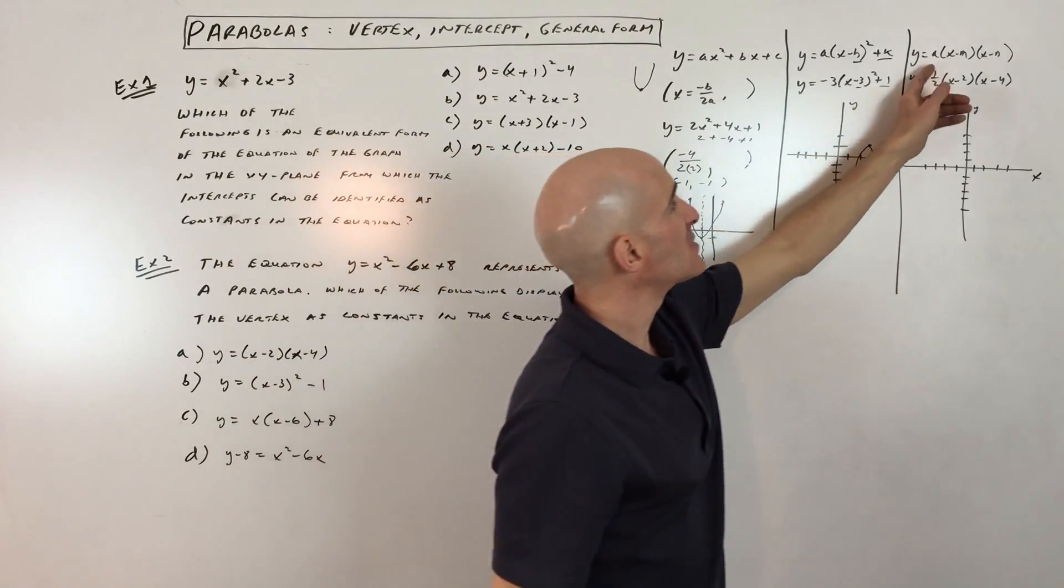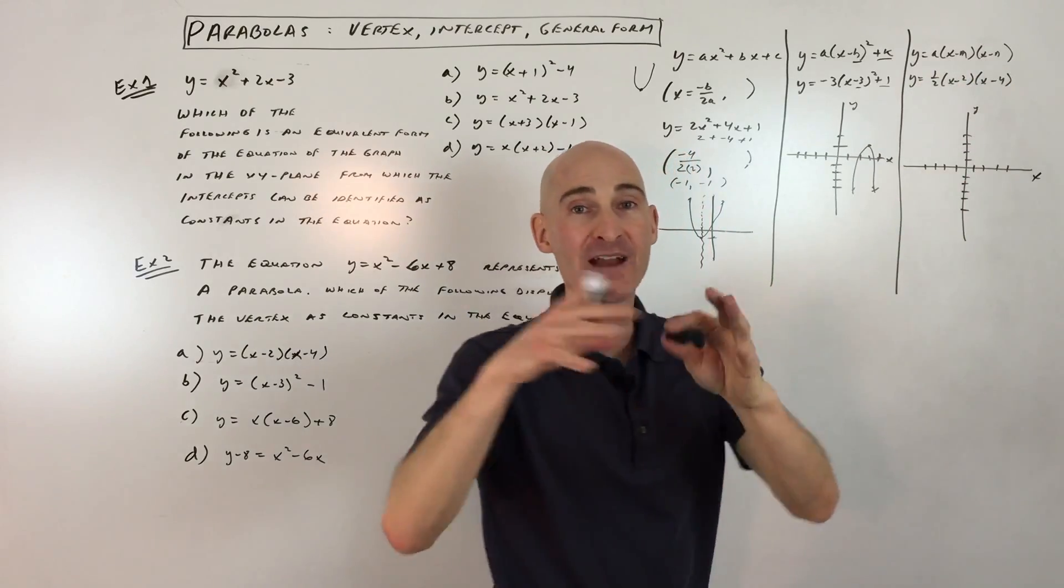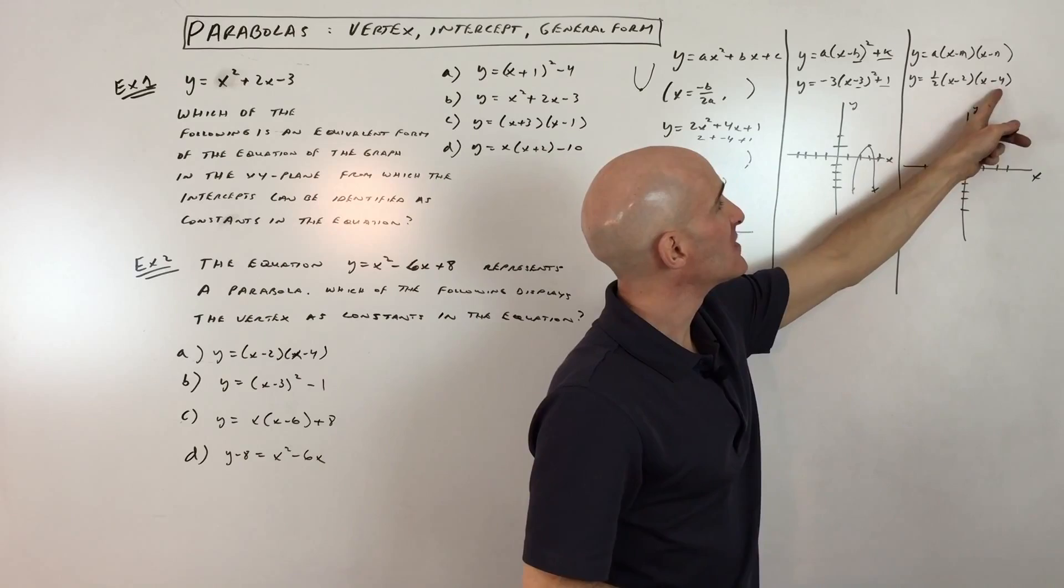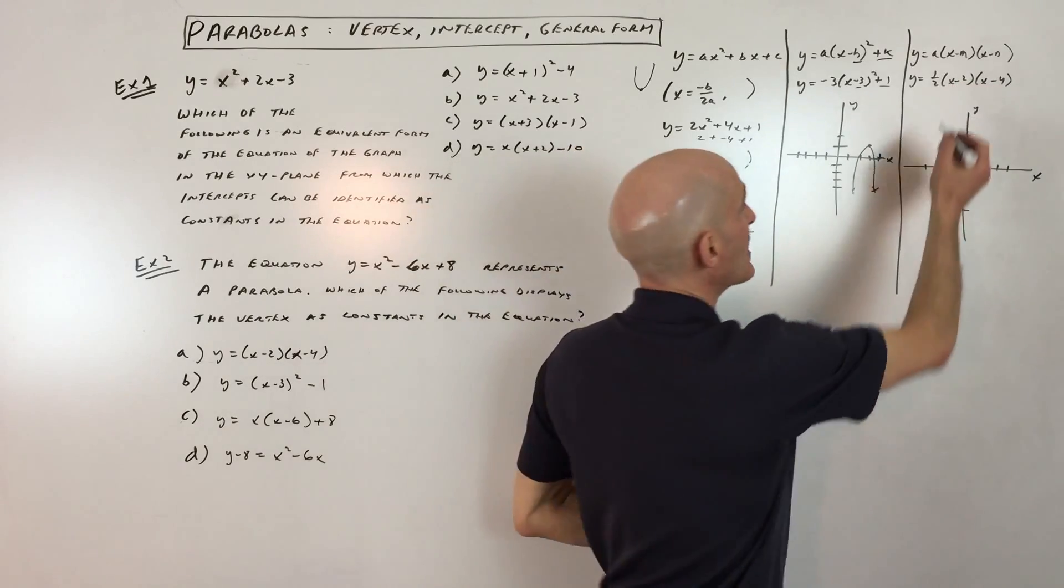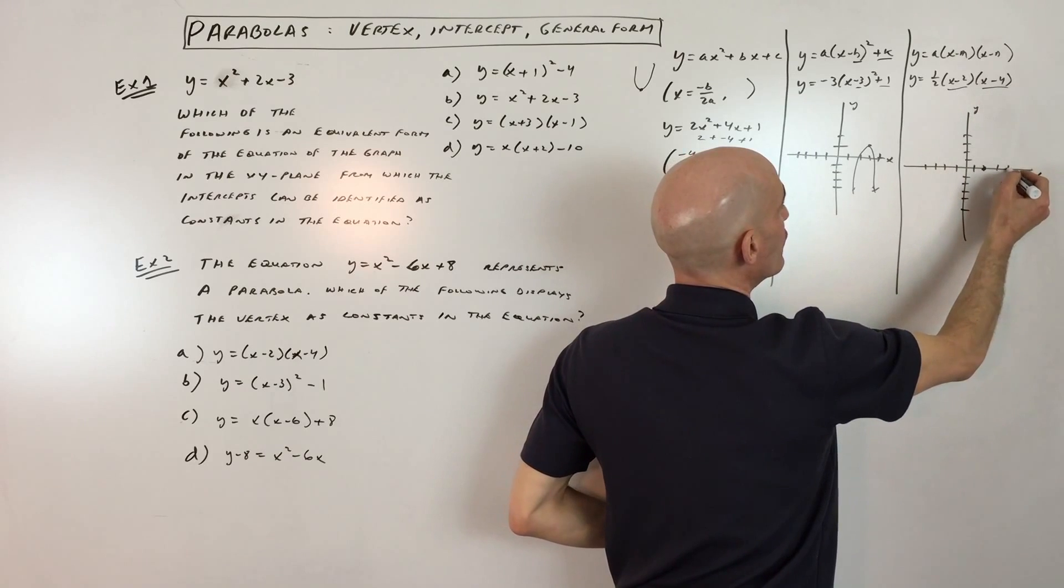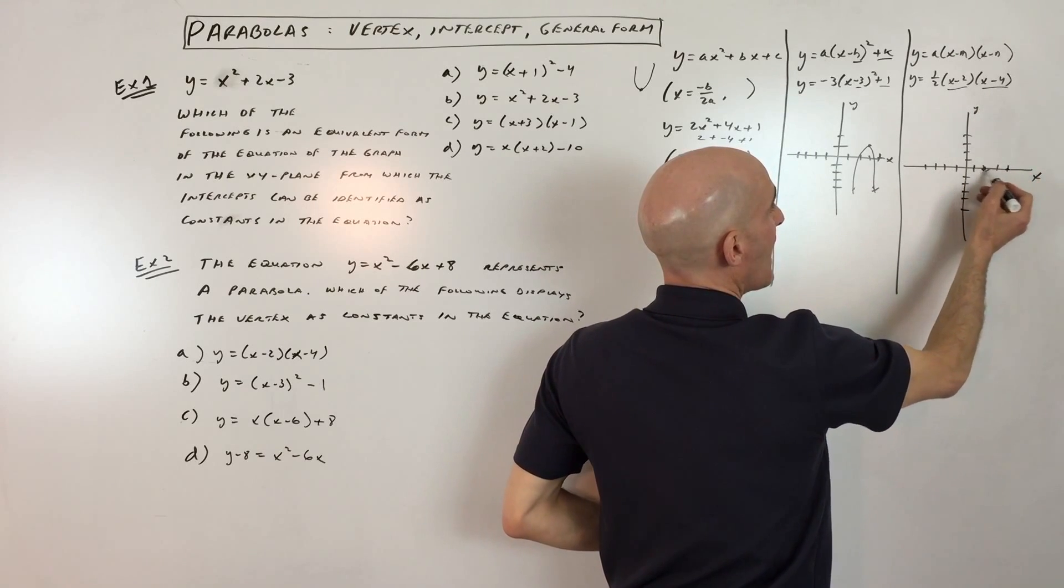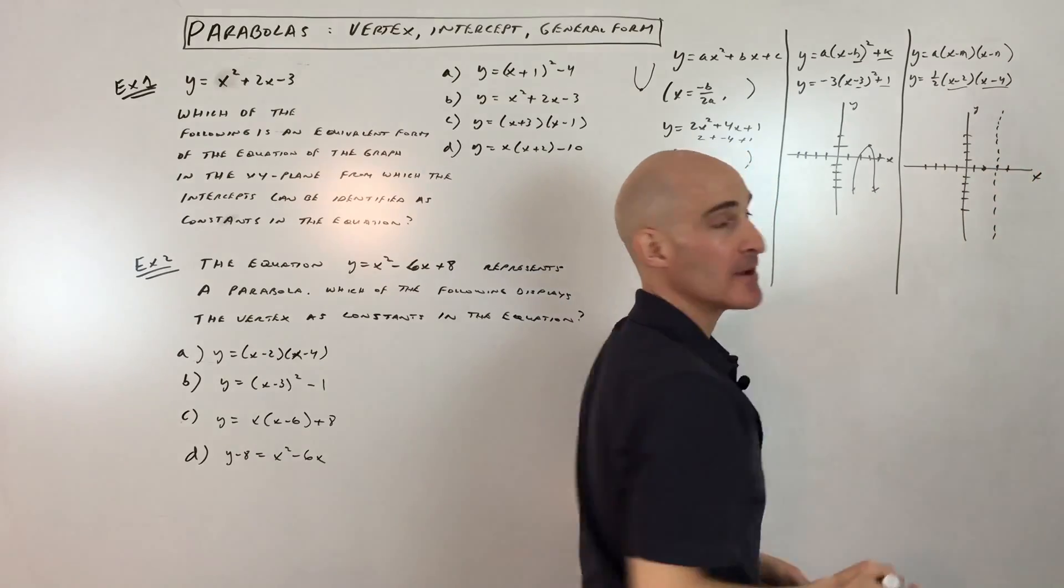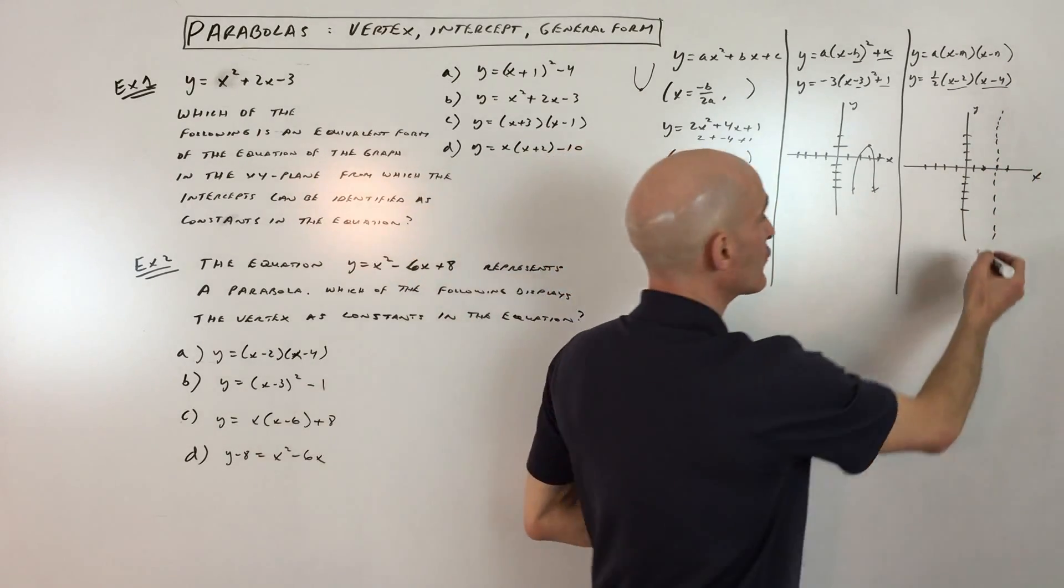And then the last one, this is what's called intercept form. You can also think of it as like a factored form, it's factored. And by setting the factors, these groups equal to 0, you can solve for the x-intercept. So if we set this to 0, we get 2. If we set this to 0, we get 4. And what you want to do is find the halfway point between those two x-intercepts, and that's going to be your line of symmetry.